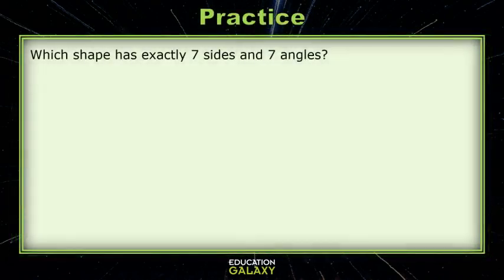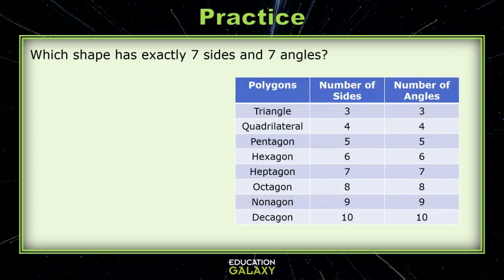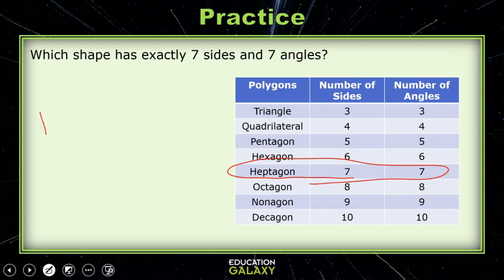Let's try a practice question. Which shape has exactly seven sides and seven angles? If we think about our shapes and how many sides and angles they have, if it's seven, it's a heptagon. It's also called a septagon, remember. So that must be our answer.